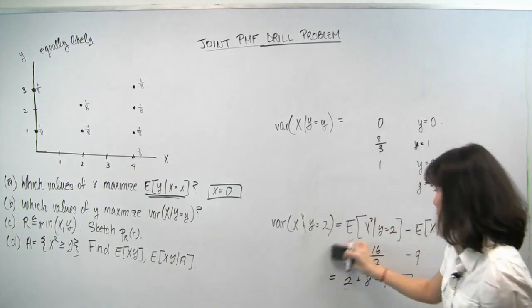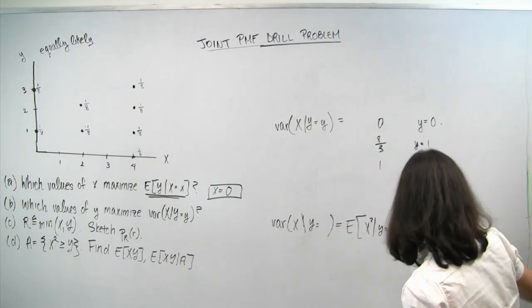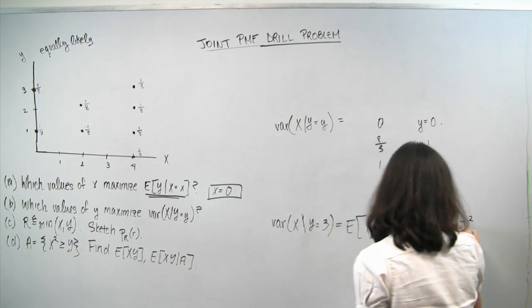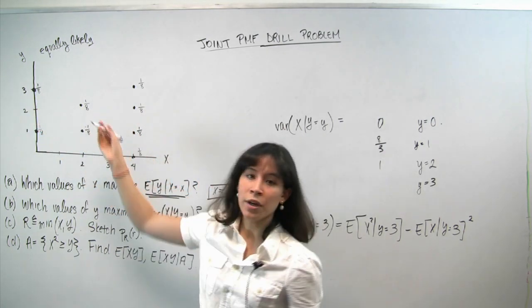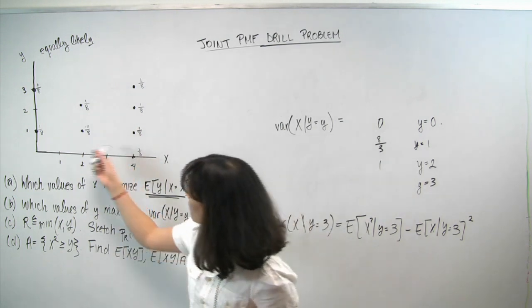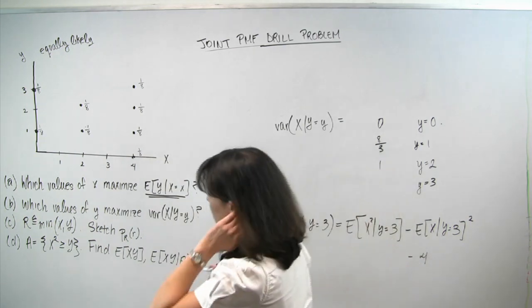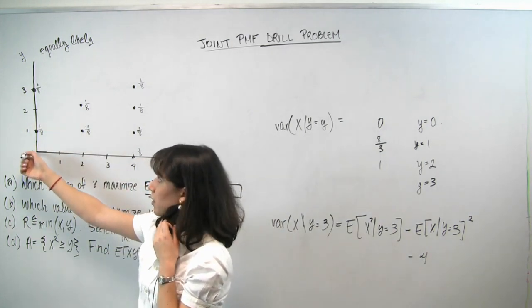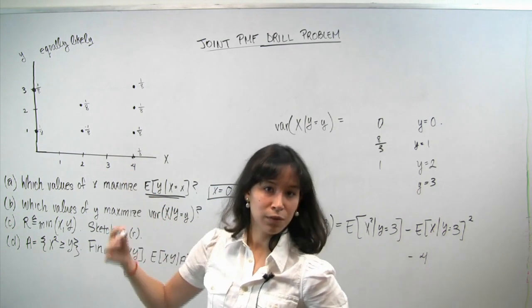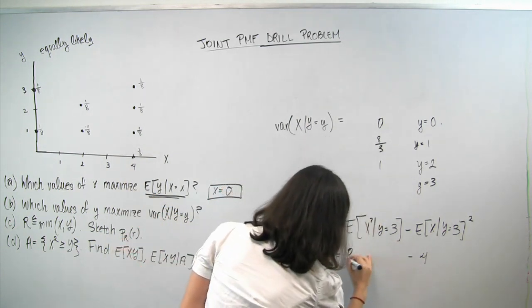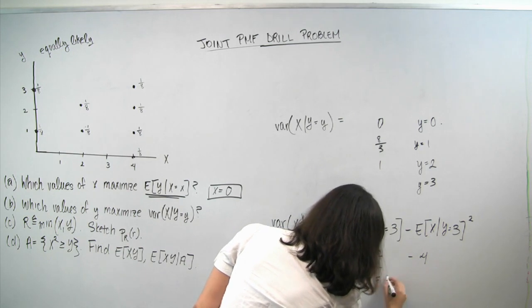Last computation: conditioning on y=3, x can take on values of 0 or 4 with probability 1/2 each. The expectation of x is 2, so we subtract 2²=4. X² takes on a value of 0 (when x=0) with probability 1/2 and 16 (when x=4) with probability 1/2. So E[X²|Y=3] = (0+16)/2 = 8. Therefore 8 − 4 = 4. The conditional variance when y equals 3 is 4.